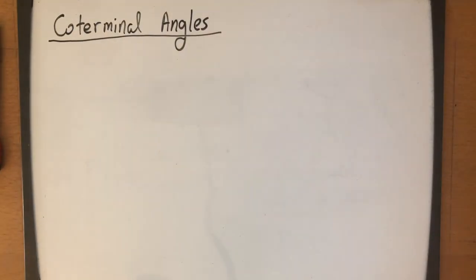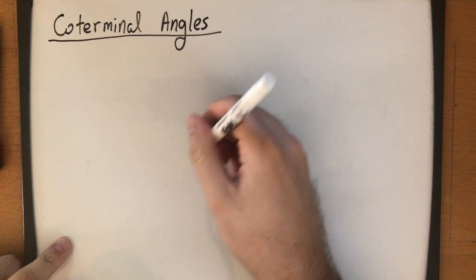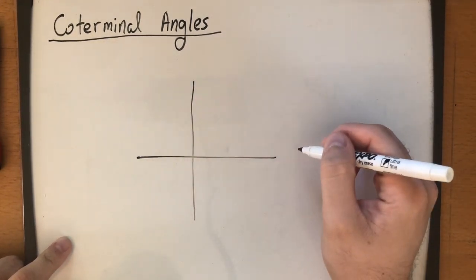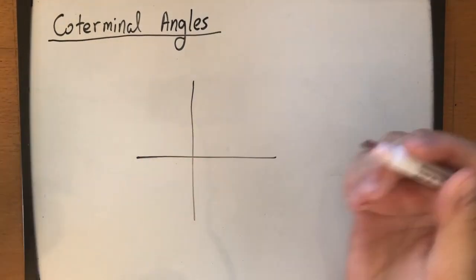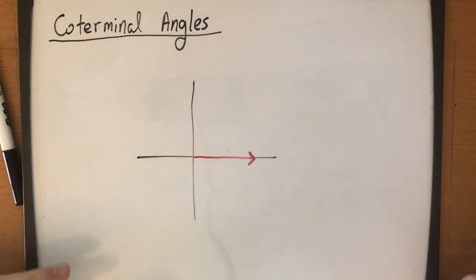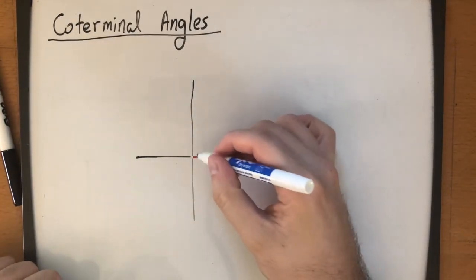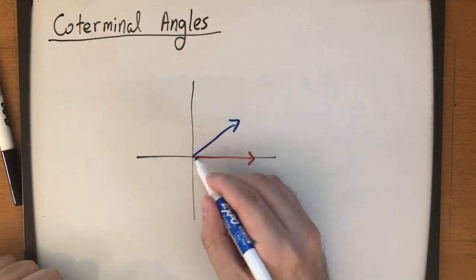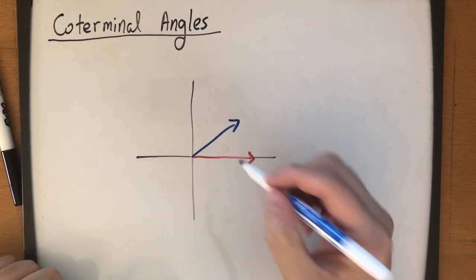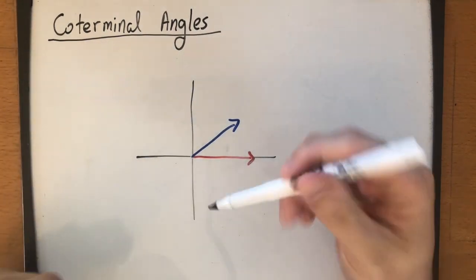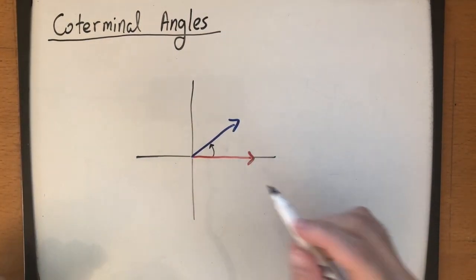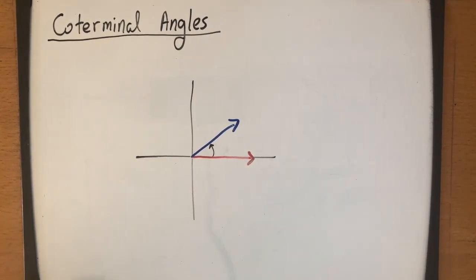Hello, welcome to the second video on trigonometry. In the previous video we talked about what an angle in standard position is. This means that if you have a rectangular coordinate system, the initial side — also known as the stationary side — is on the positive x-axis, with the endpoint right at the origin. The terminal side, which is the side that rotates, also has its endpoint at the origin. The vertex is at the origin, where both endpoints meet. The terminal side can move either counterclockwise or clockwise. A counterclockwise angle means a positive angle, and a clockwise angle means a negative angle.